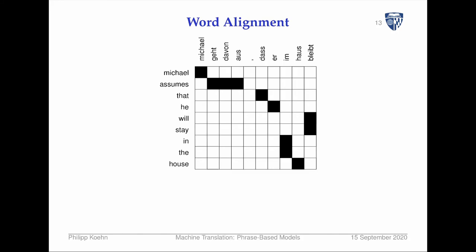Recall the idea of word alignment. There are some unambiguous things like 'Michael' translating as 'Michael.' Then there are phrasal things — 'Geht davon aus' becomes 'assumes.' There are things like what do we do with commas — maybe there's an argument about that.